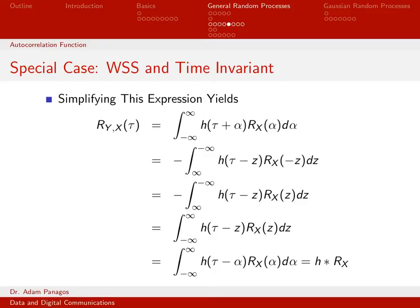This is very similar to the result when we considered just the wide-sense stationary input with an arbitrary system. But there, we still ended up with a convolution where the impulse response component was still two-dimensional — for some fixed time t, we did a convolution on the second time dimension of h. Now, since we have a time-invariant system and h is one-dimensional, we get a more conventional convolution: h(τ) convolved with r_x(τ).